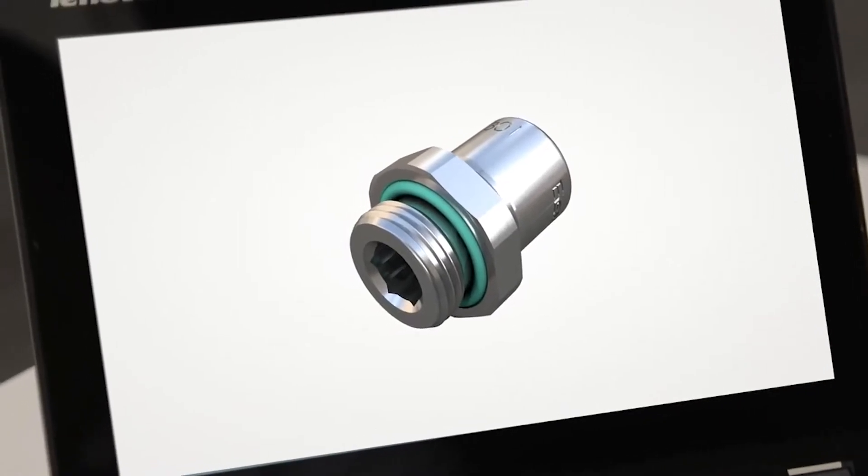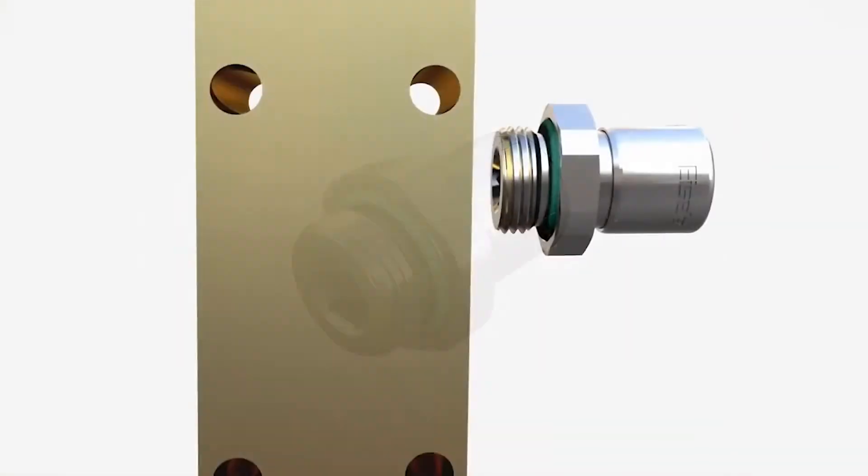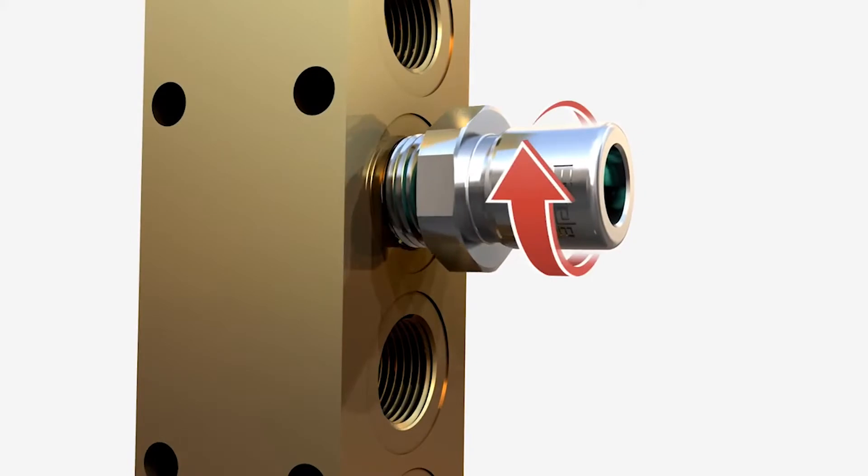With cast parts in particular, the rough surface may have to be refinished. The specified torque is also important when screwing in.